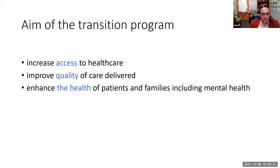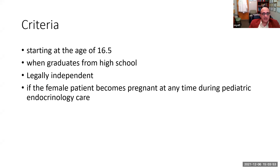The aim of the transition of care program is to improve and increase access to health care, improve the quality of diabetes care delivery, and enhance patient health outcomes — including mental health issues, which my colleague discussed in the previous lecture. Our program starts at age 16 and a half, and we hope to finalize the transition by age 18. We also initiate transition when patients graduate high school early, become legally independent, or when female patients become pregnant at any point during pediatric endocrine diabetes care.